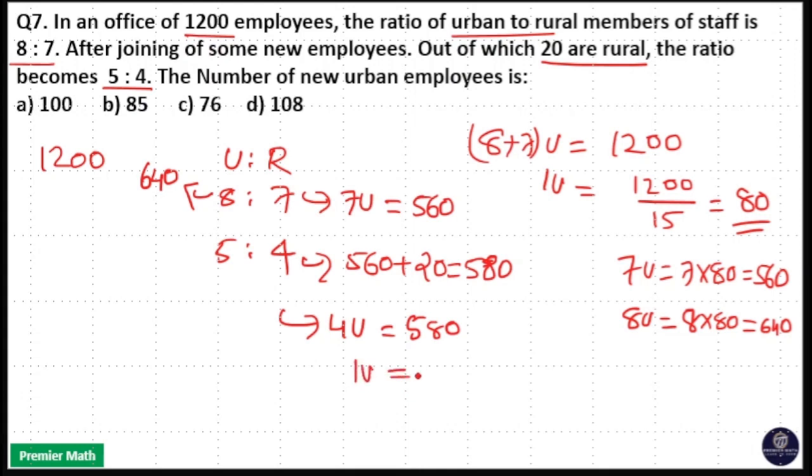1 unit will be 580 divided by 4, which equals 145. So 145 is 1 unit in the new ratio.